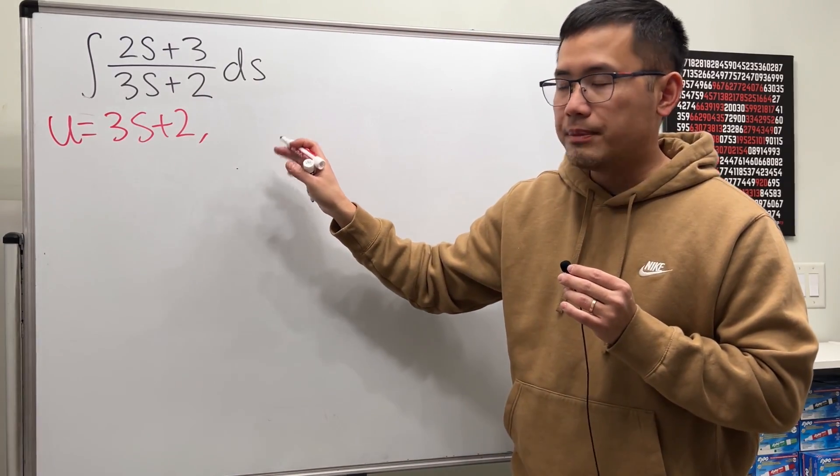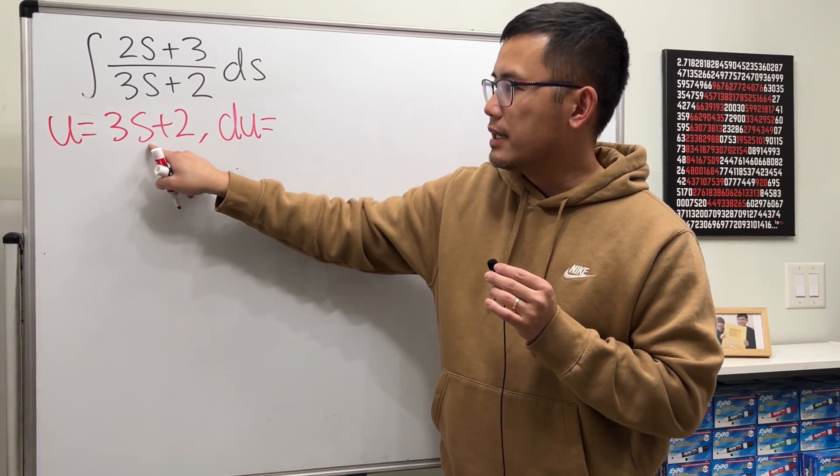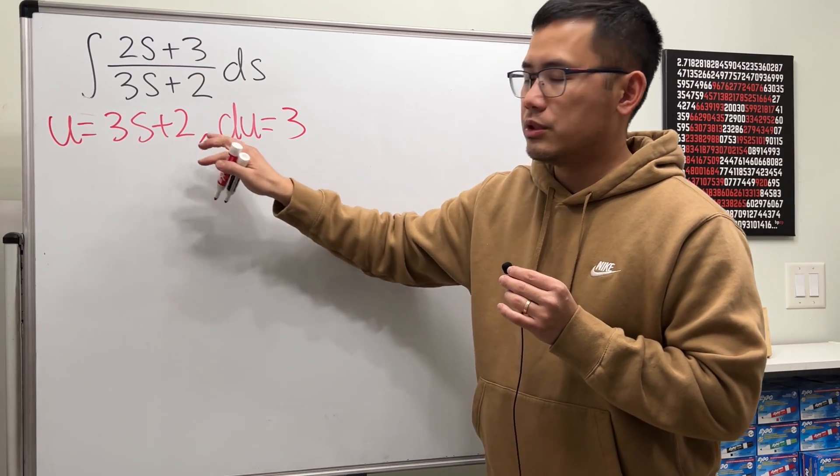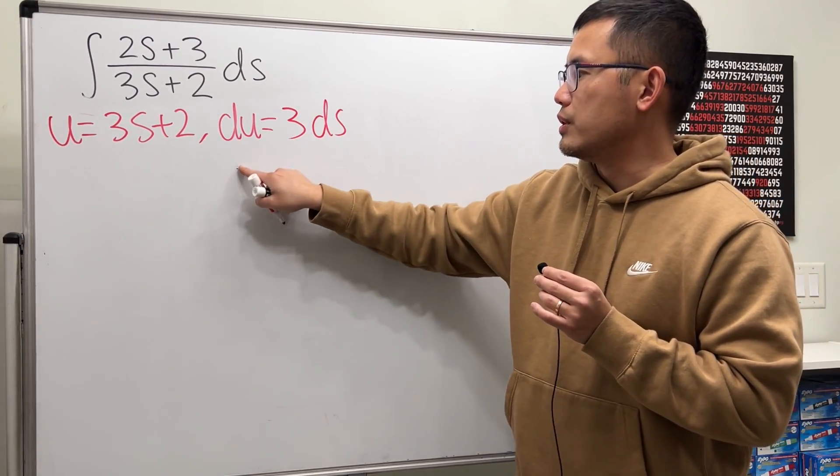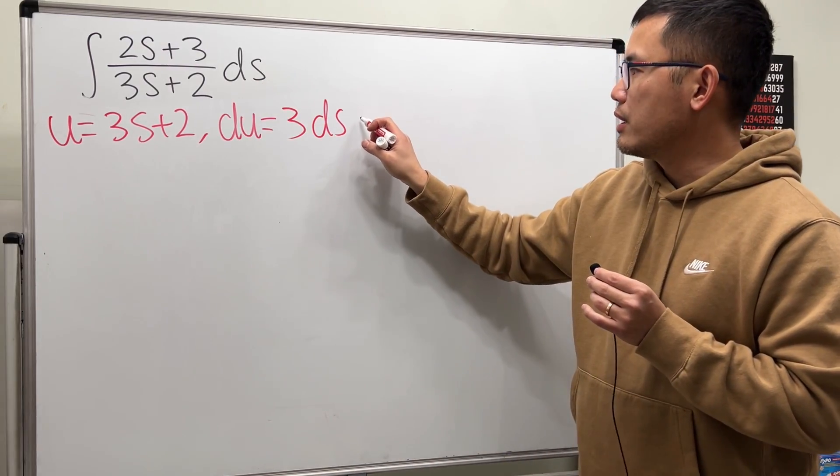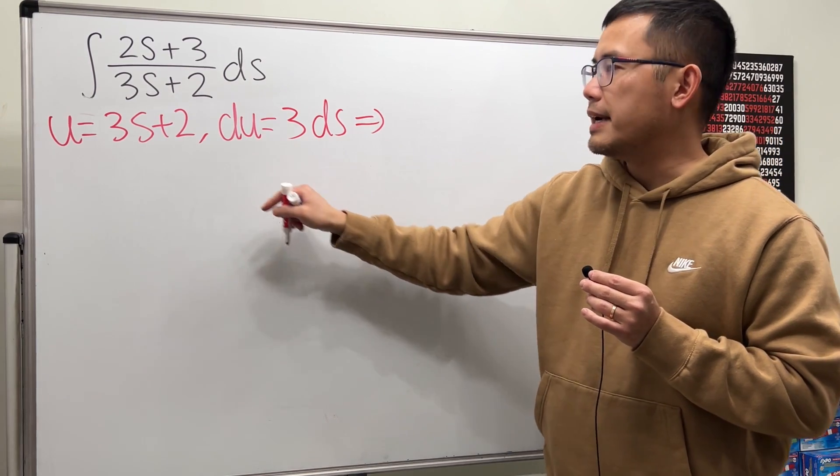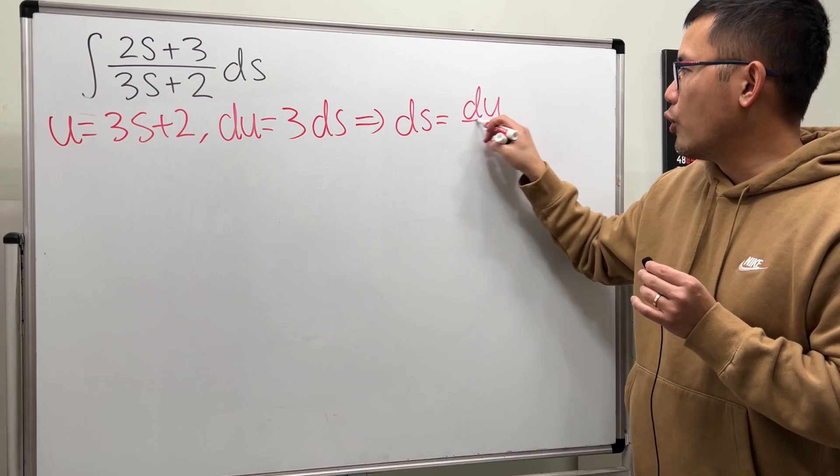And then differentiating both sides, we get du equals the derivative of 3s in the s world is just 3. And the derivative of plus 2 is just 0. And then attach the ds here because we are talking about the differential. And then let's also isolate the ds. So right here, by looking at this equation, we can divide the 3 on both sides. So we see ds equals du over 3.